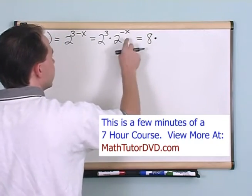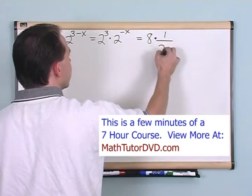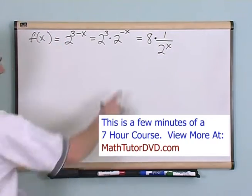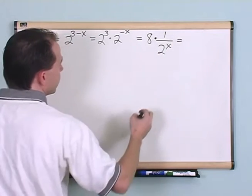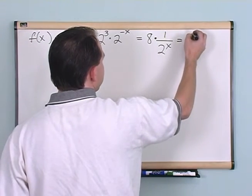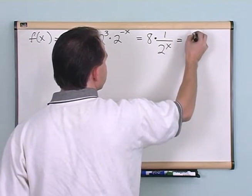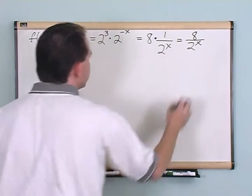And then this can be written as 1 over 2^x because you have a negative exponent. So then in the end this would be 8 over 2 to the x power.